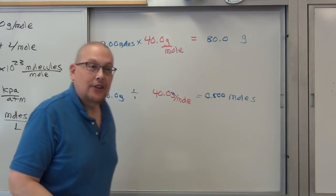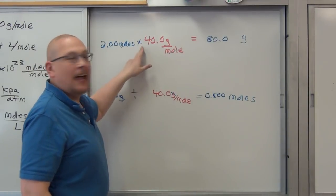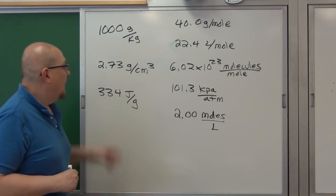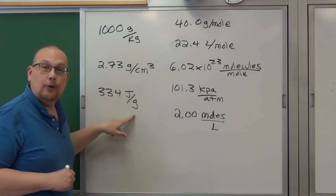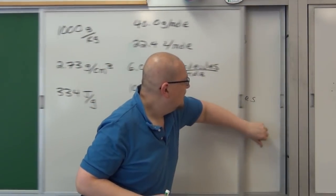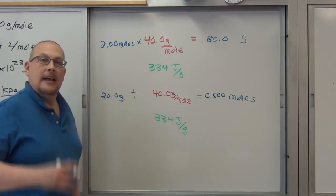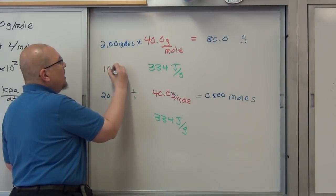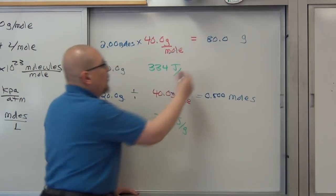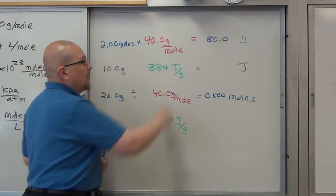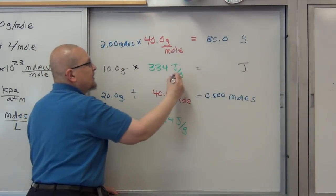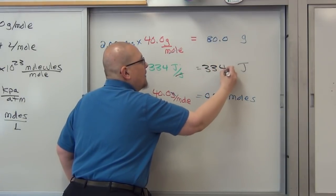If you're trying to solve for the numerator, multiply. If you're trying to solve for the denominator, divide. For the next example, let's do heat of fusion. It takes 334 joules to melt a gram of ice when you're at the melting point — 334 joules per gram. Suppose we have 10.0 grams of water. We want to find out how many joules it will take. We're trying to solve for the numerator, so we multiply. Grams will cancel and leave you with 3340 joules.